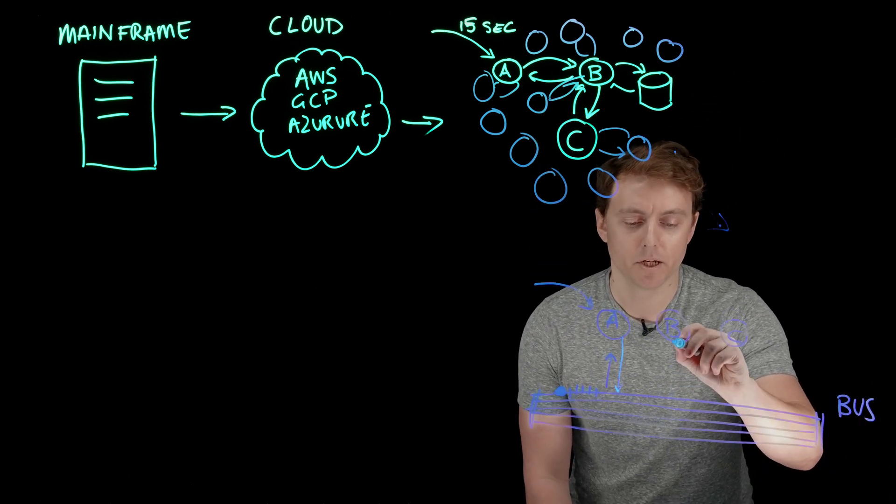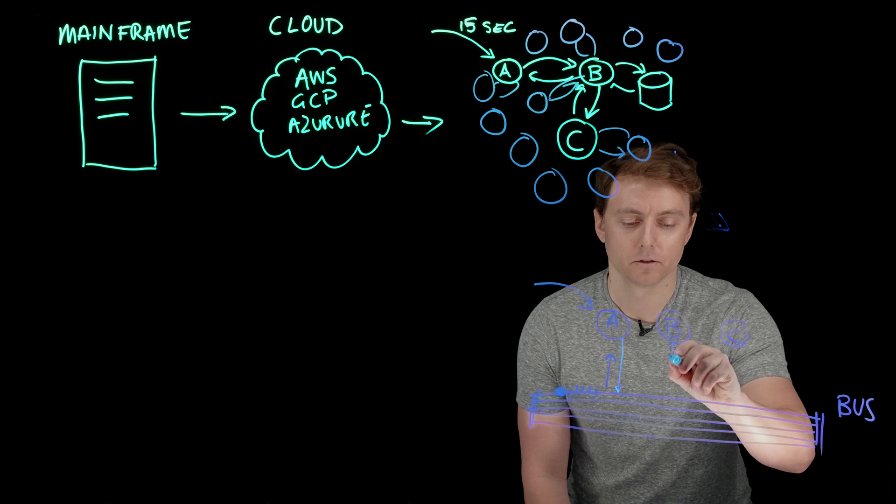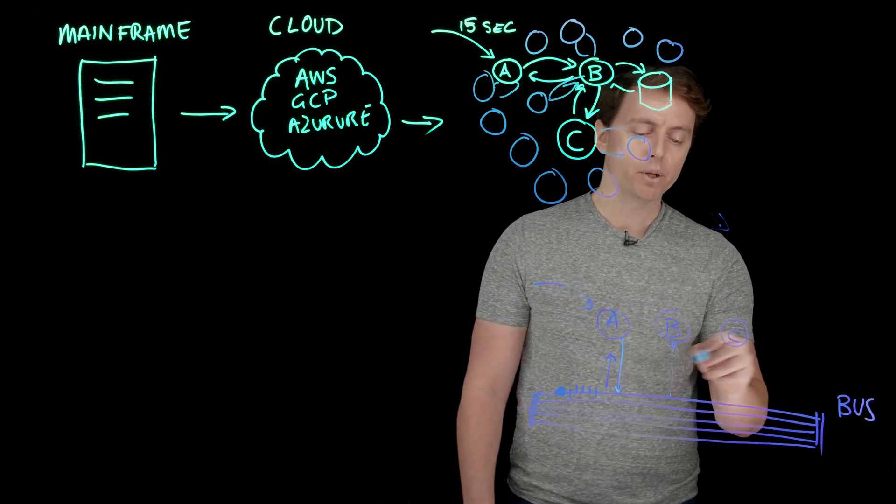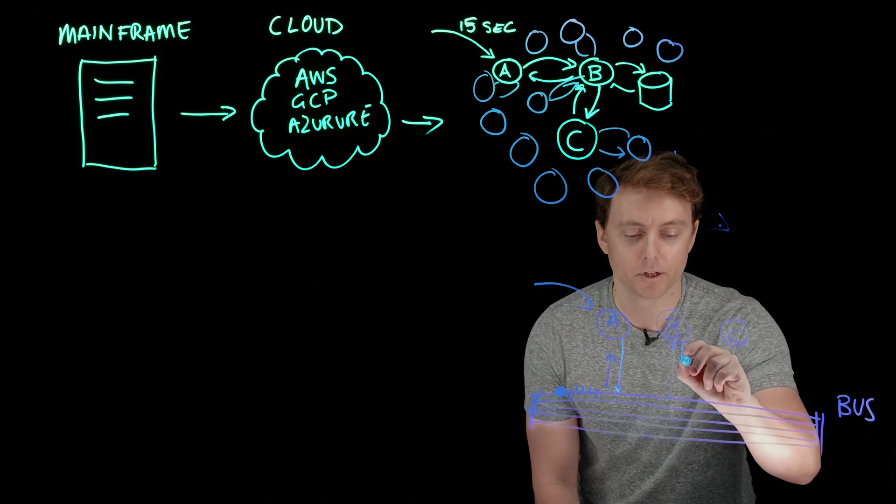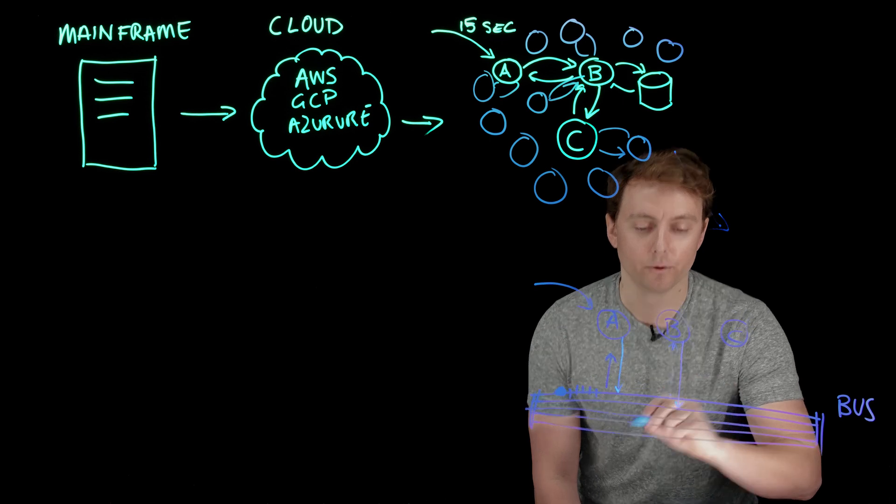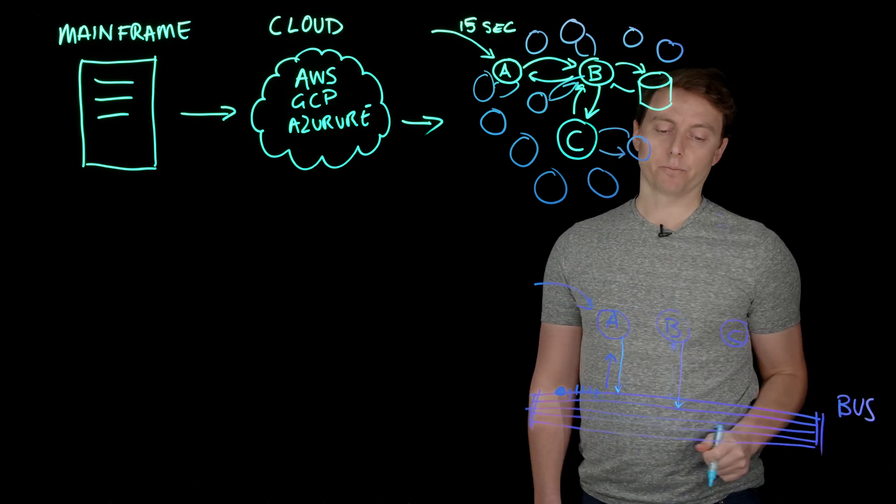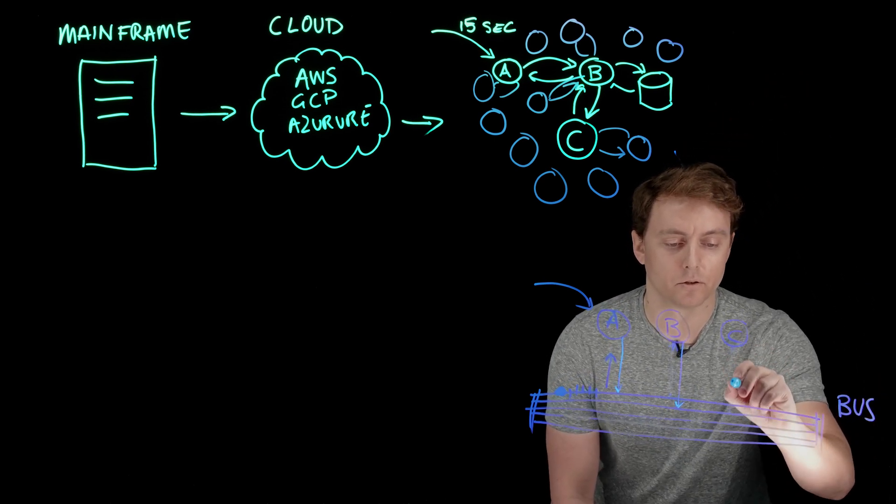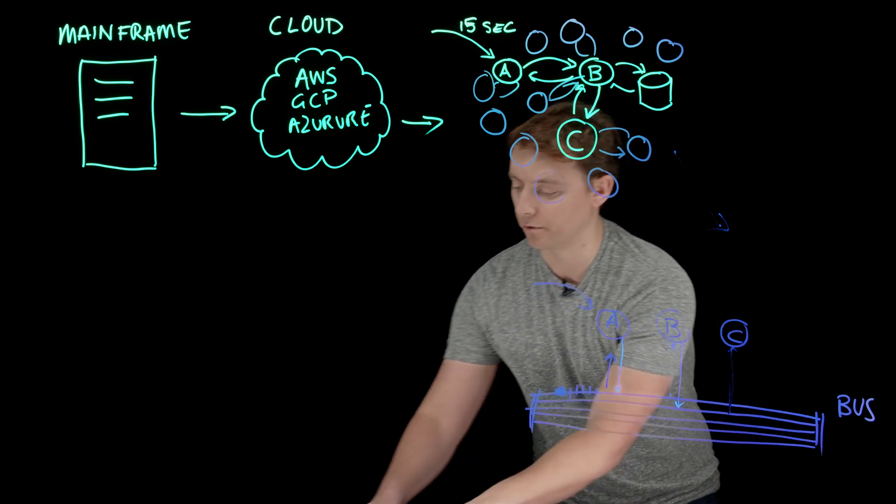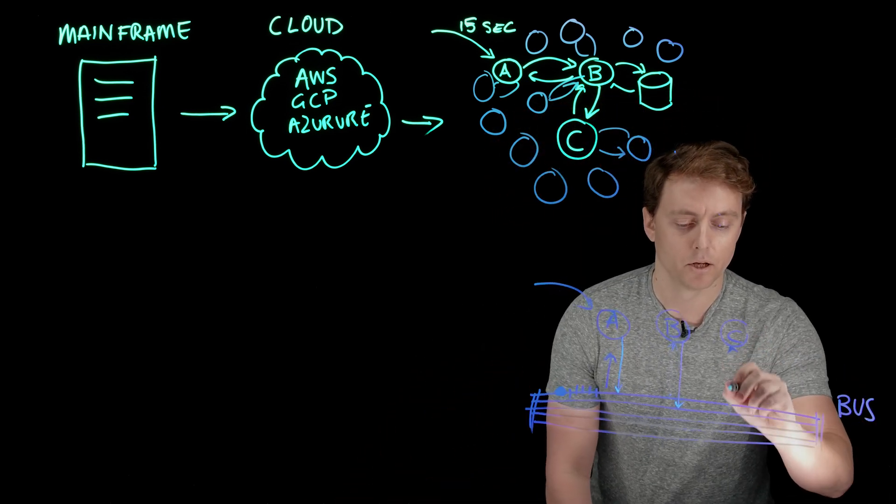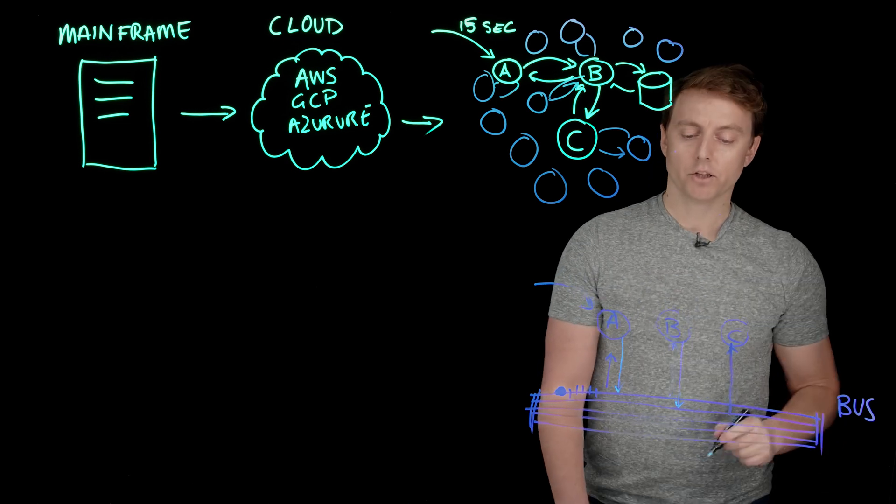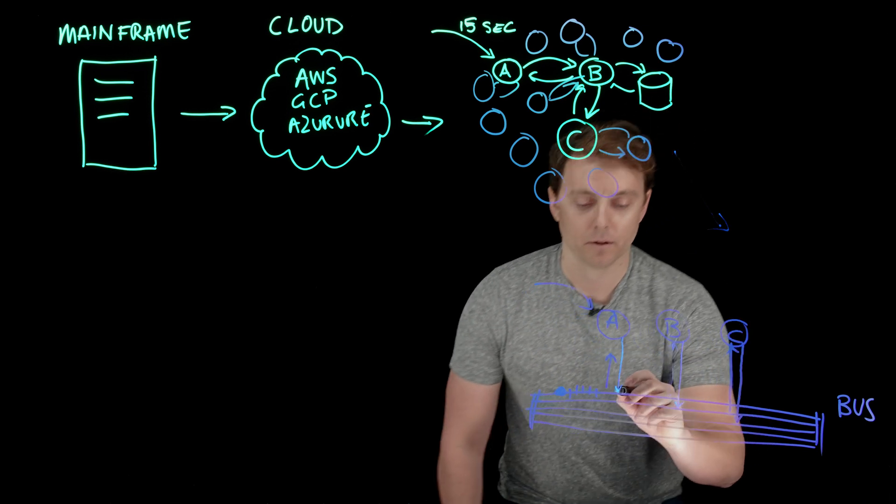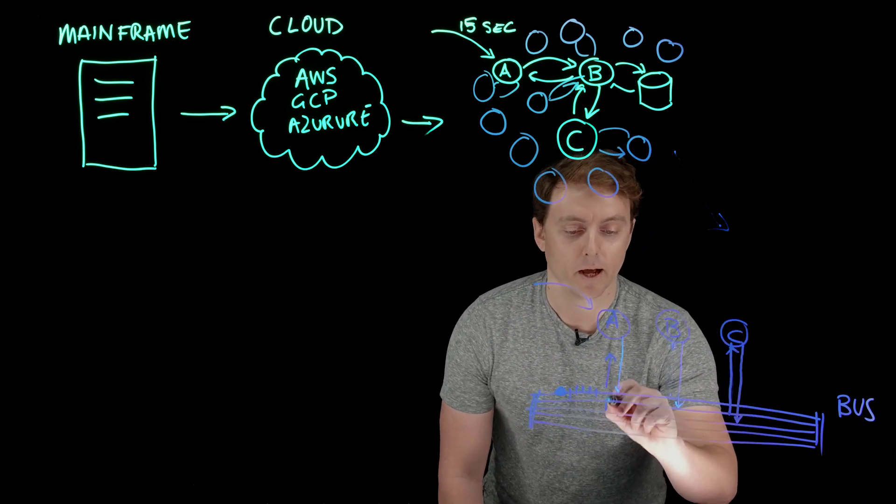Previously we had the situation where B was the one who had to respond, so now we're going to have B listening to the queue that A is pushing to. Then B is going to do something and push its own output to its own queue. We know that C cares about the output of B, so C is listening to the output of B. Likewise, C is going to output to its own queue which A can listen from.